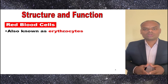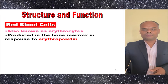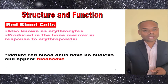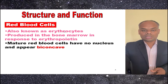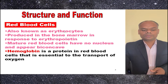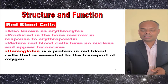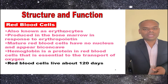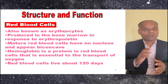RBCs are also known as erythrocytes. They are produced in the bone marrow in response to erythropoietin. Mature RBCs have no nucleus and appear biconcave. Hemoglobin is a protein in red blood cells that is essential to the transport of oxygen. The life of RBC cells is about 120 days.